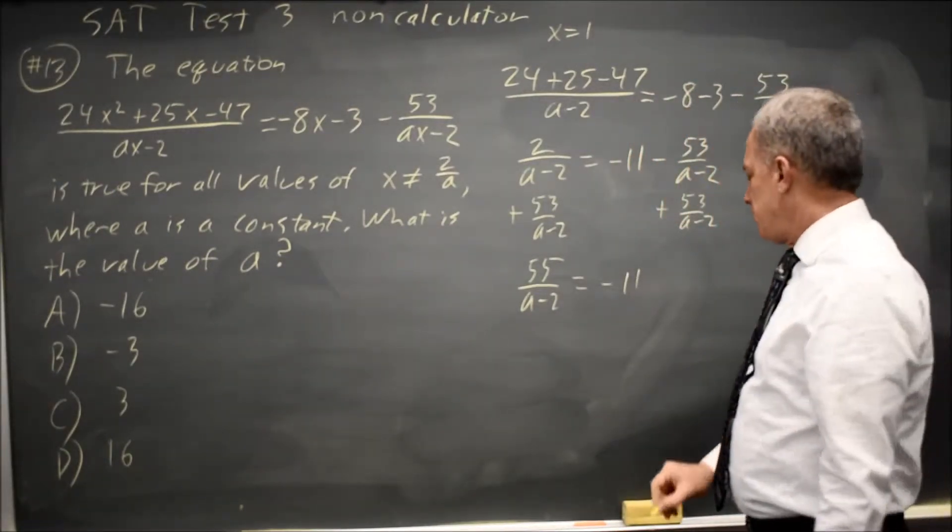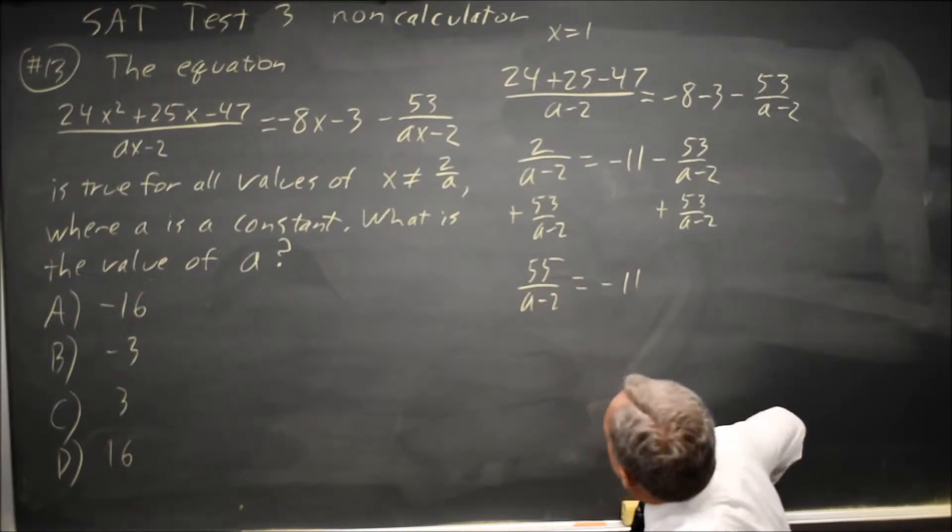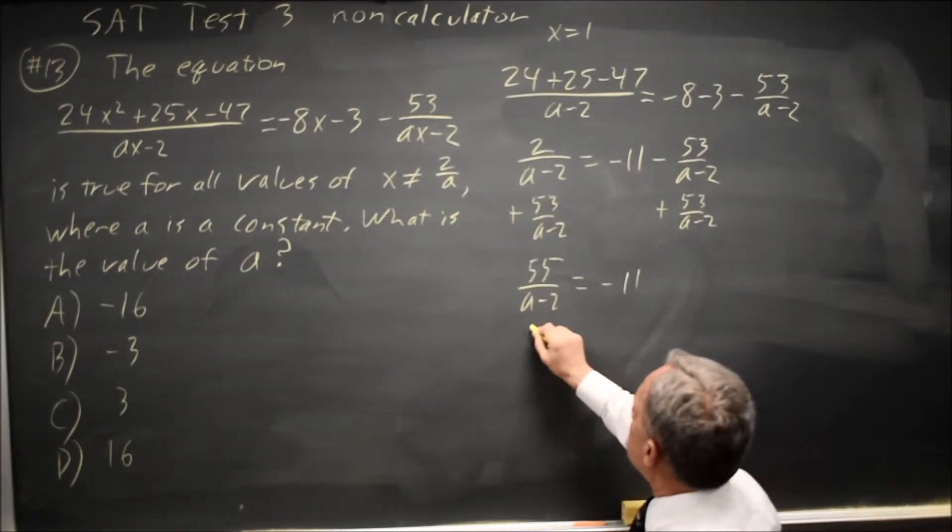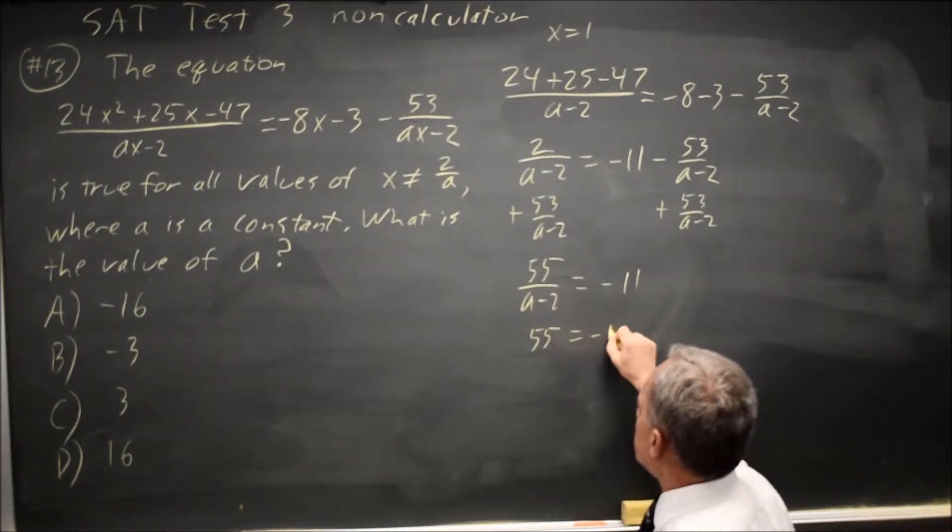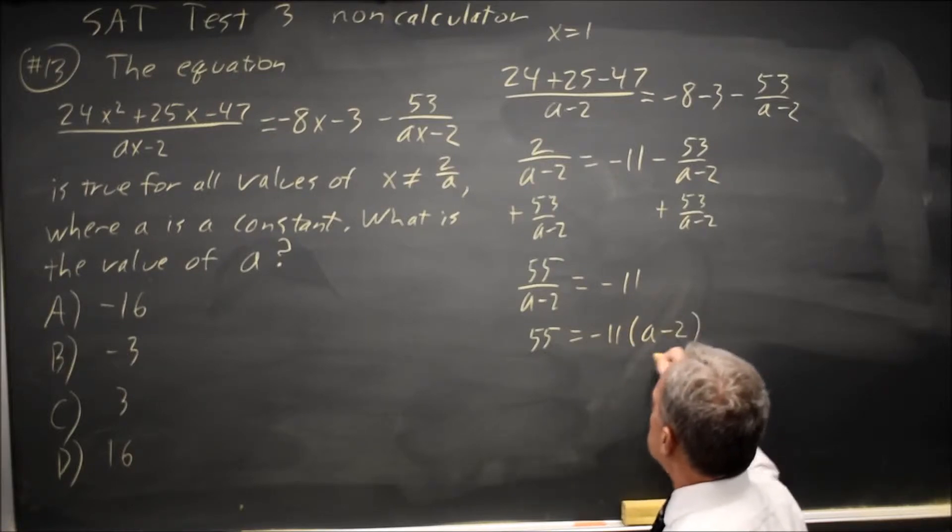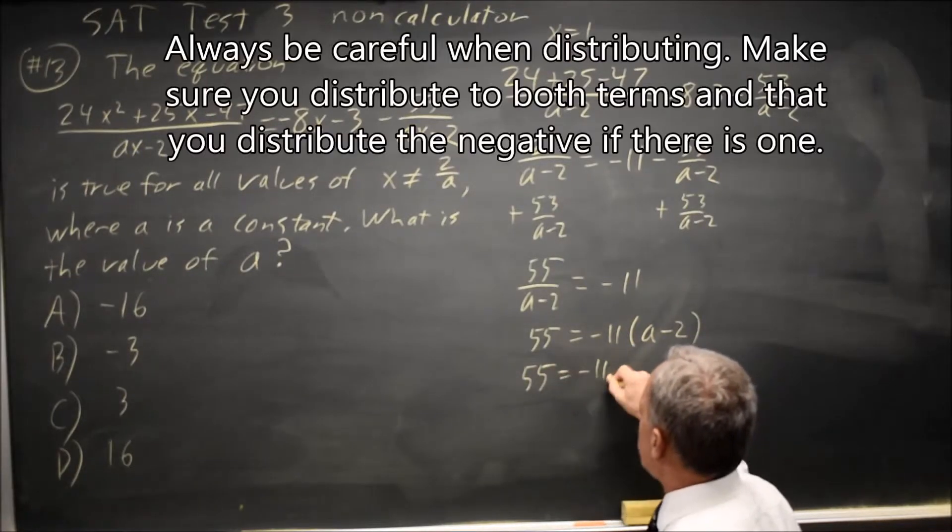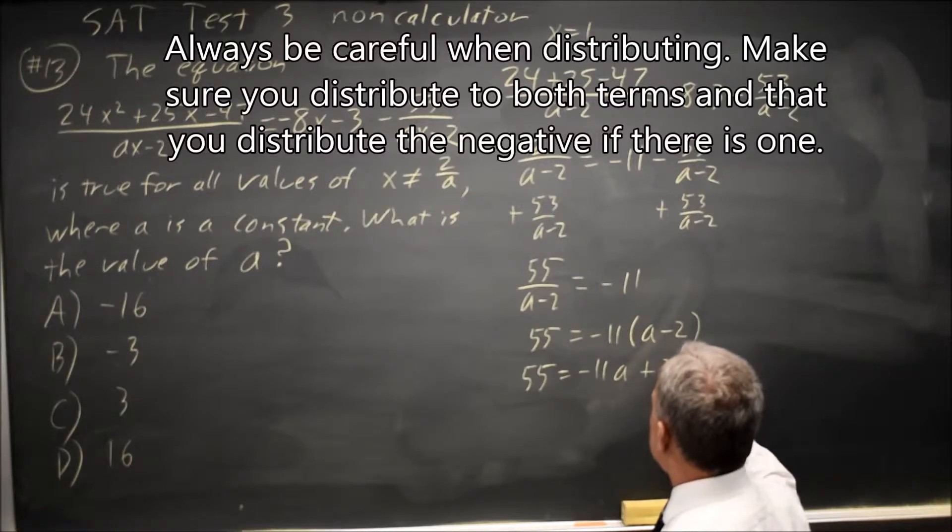I want to solve for A, so let's multiply both sides by A minus 2, and that gives me 55 equals negative 11 times A minus 2, distributing 55 equals negative 11A plus 22,